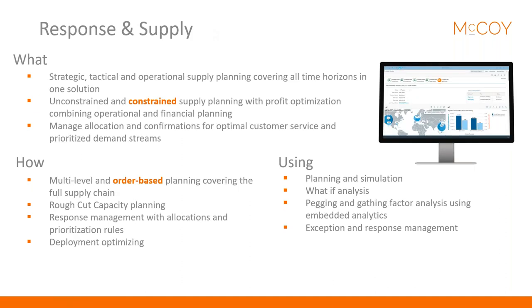The response and supply module lets you create a supply plan covering all time horizons — strategic, tactical, and operational — in one solution. You can create an unconstrained plan to identify bottlenecks, or a constrained plan taking into account profit optimization by setting capacities in your factories or from your suppliers. You can also manage allocations and confirmations for optimal customer service and prioritize demands using multi-level and order-based planning, rough capacity planning, and deployment optimization.